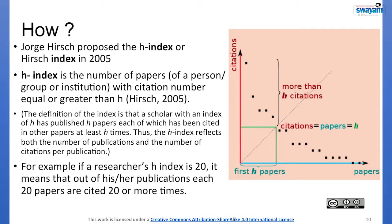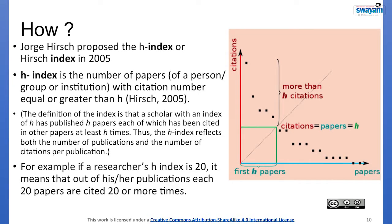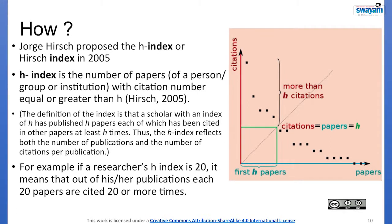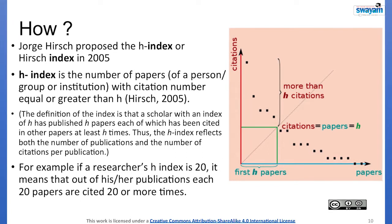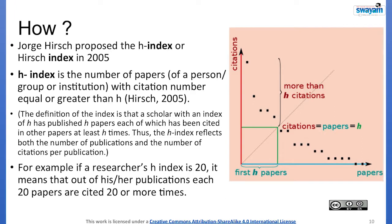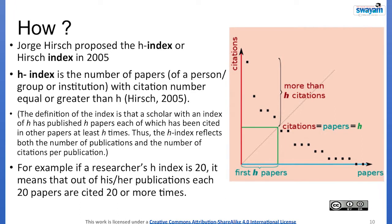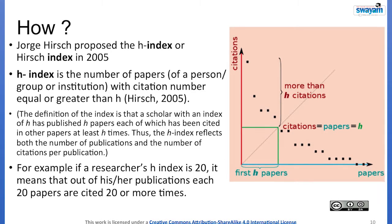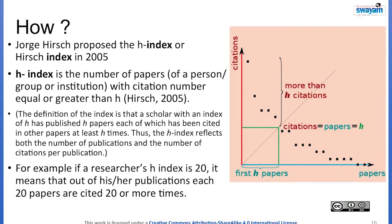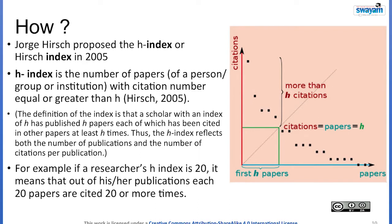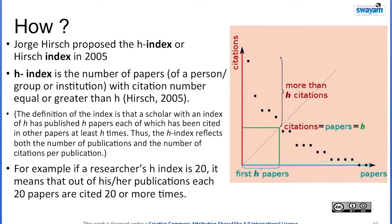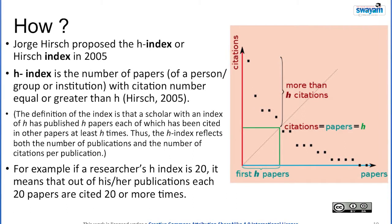In the graph given by Hirsch himself, citations are plotted on the y-axis and number of papers on the x-axis. The first H papers which are cited more than H times gives the H-index of that author — when citations equal the number of papers, that is H. For example, if a researcher's H-index is 20, it means that 20 of their research publications are each cited 20 or more times.